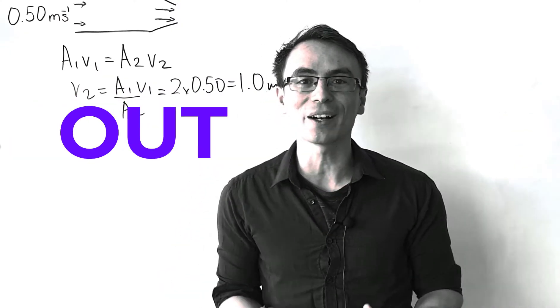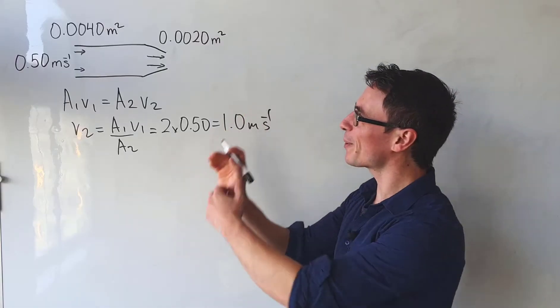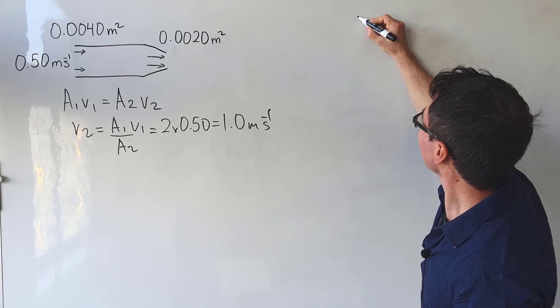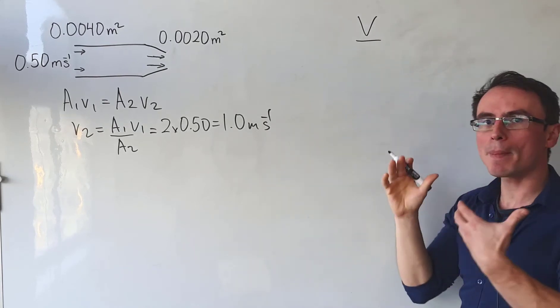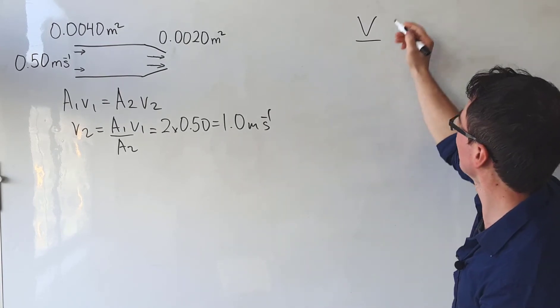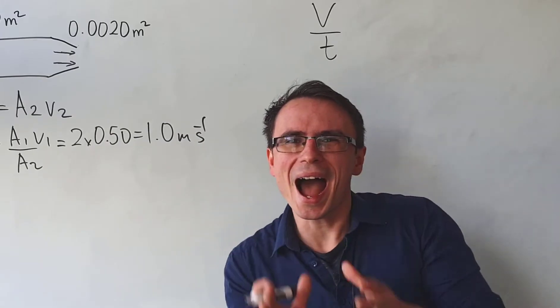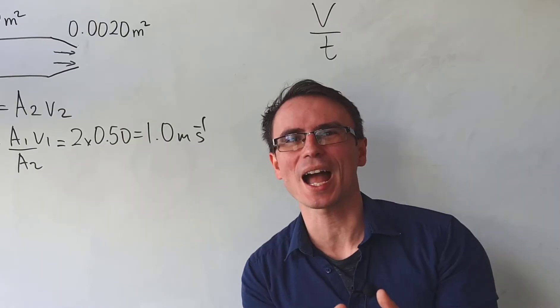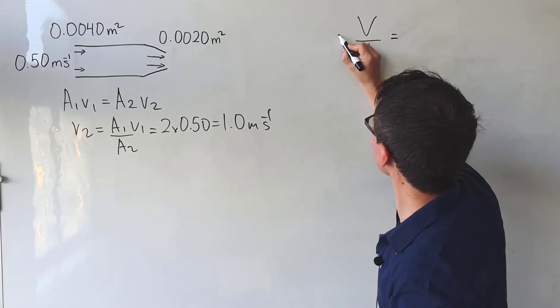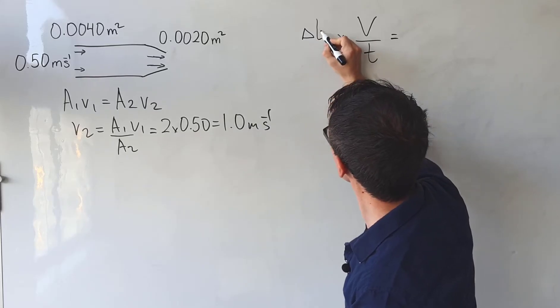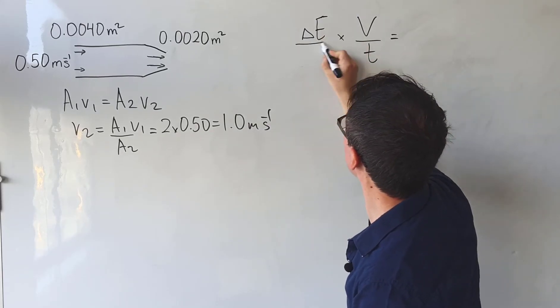Well, these questions often involve a quantity known as the volume flow rate. This is simply defined as the amount of volume of fluid that passes through a cross-sectional area per unit time.